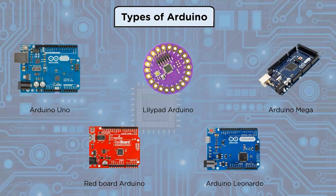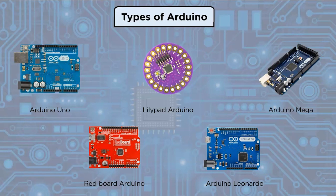Arduino Leonardo is Arduino's initial development board with a single microcontroller and USB board. As a result it may be less expensive and easier to use. Because the board handles USB directly, board libraries are available that allow it to emulate a computer keyboard, mouse, and other components.